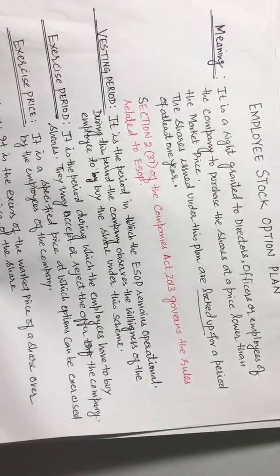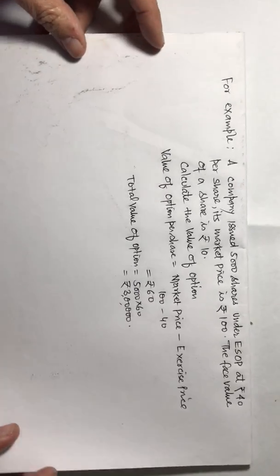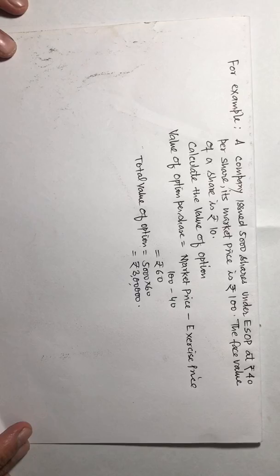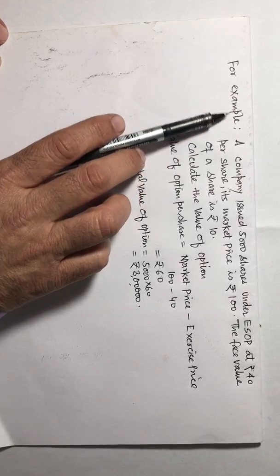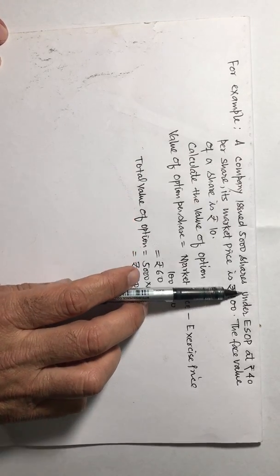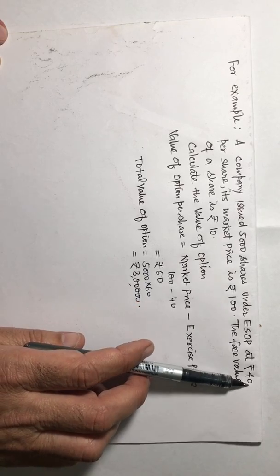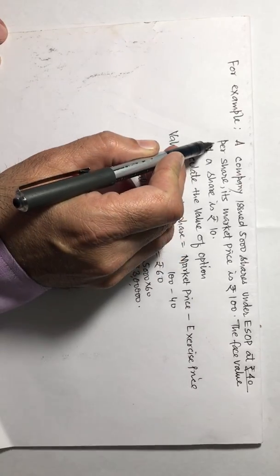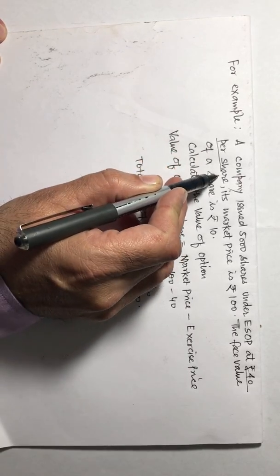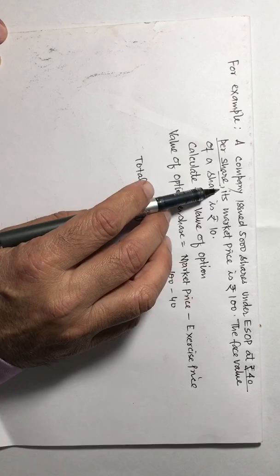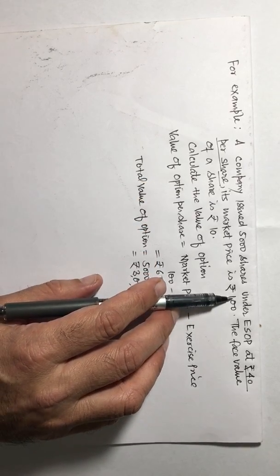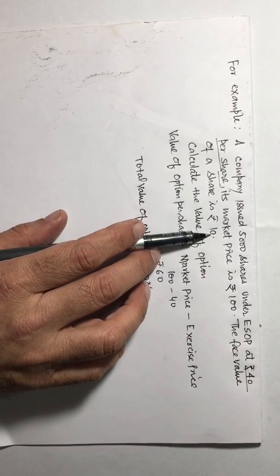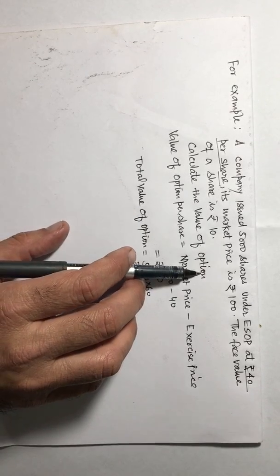Now understand a small numerical which will make the meaning of value of options more clear to you. Suppose a company issued 5000 shares under Employee Stock Option Plan at Rs. 40 per share. So 40 per share is the exercise price. Its market price is 100. This is the market value of the share. The face value of a share is Rs. 10.